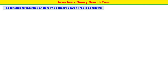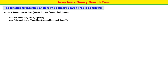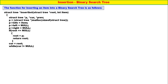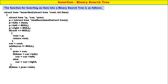Now let us write the complete insertion function. The function for inserting an element into a binary search tree: create a new node, P of info is equal to item, P of left is equal to null, P of right is equal to null. If root is equal to null, root is equal to P, return root. Otherwise, kerr is equal to root. While kerr is not equal to null: priv is equal to kerr; if item is less than kerr of left, move to the left; otherwise move to the right. If item is less than priv of info, it becomes the left child; otherwise it becomes the right child. And last, return root. That is all — the function for inserting an element into a binary search tree. It is quite simple and straightforward.